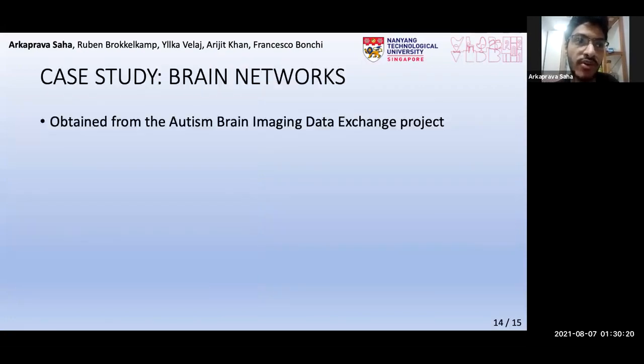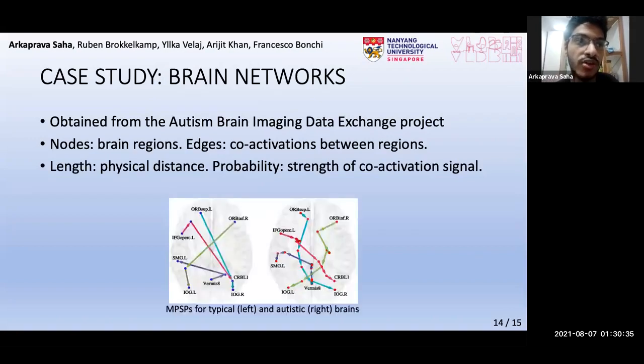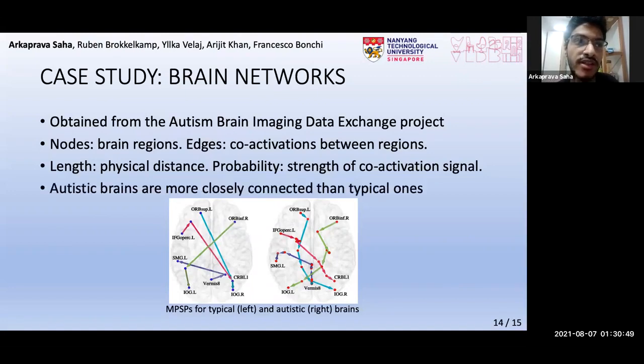We now demonstrate a case study on brain networks of children as obtained from this project. A brain network can be modeled as an uncertain graph, where the nodes, the edges, the edge lengths, and the probabilities are as shown here. This figure shows MPSPs in typical brains on the left and in autistic brains on the right. Notice for example that the pink path on the left is longer than the pink path on the right. This is consistent with various works in neuroscience which show that autistic brains are more closely connected than typical ones. This underlines the importance of our problem.